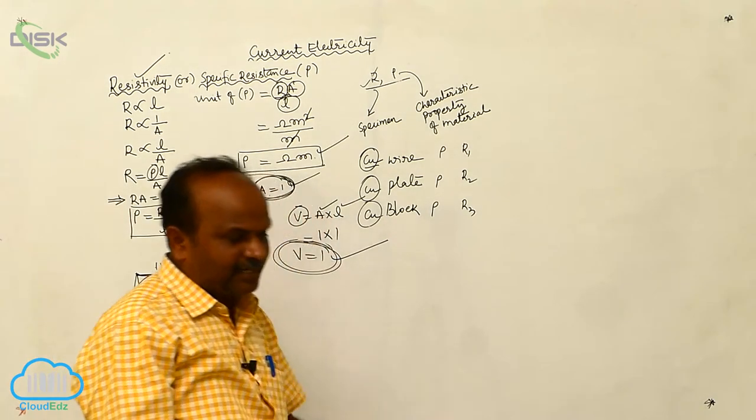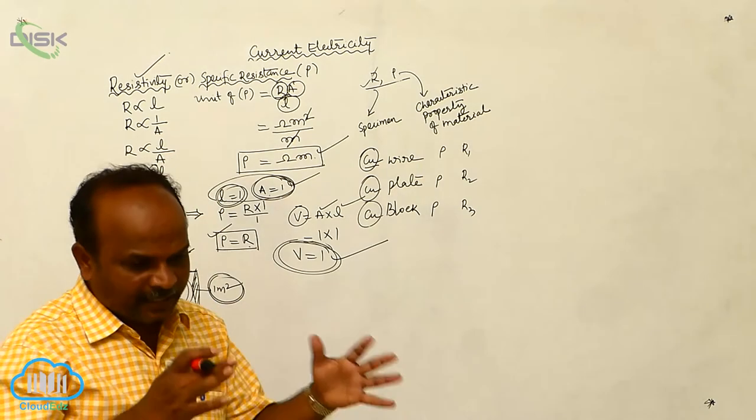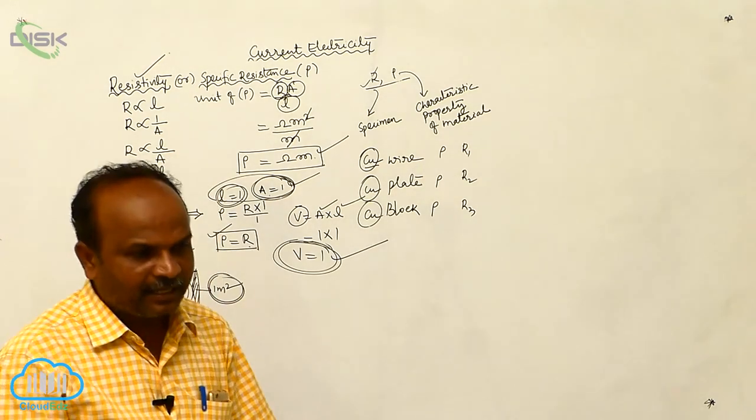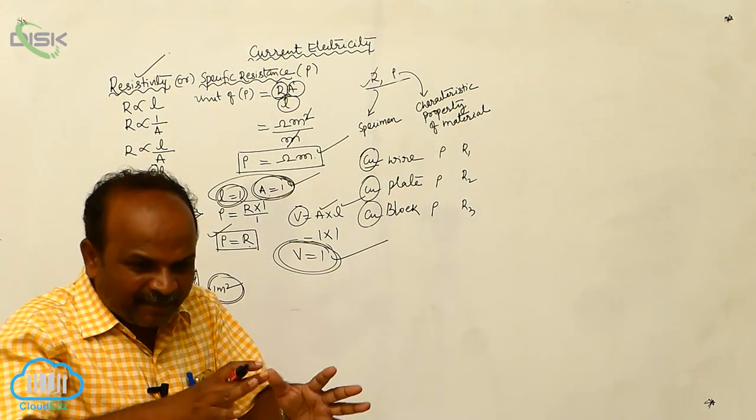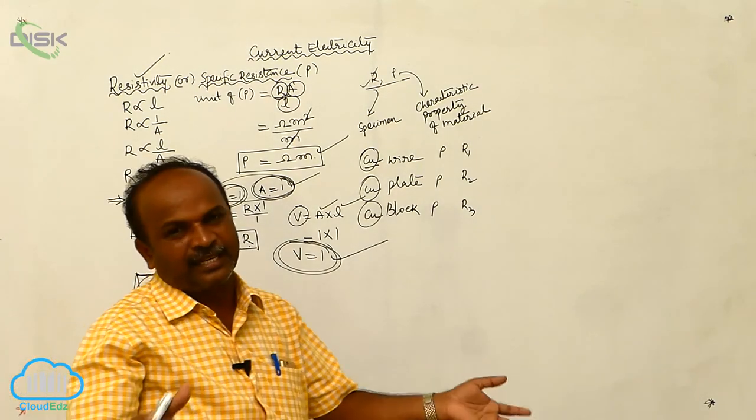In current electricity, or in electricity, four similar quantities are there.